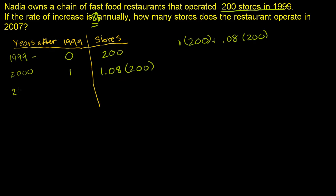Then in 2001, what's going on? This is now two years after 1999. You're going to grow 8% from this number. So you're going to multiply 1.08 times that number. Times 1.08 times 200. I think you get the general gist. If after n years after 1999, it's going to be 1.08. Let me write it this way. It's going to be 200 times 1.08 to the nth power. After two years, 1.08 squared. One year, 1.08 to the first power. Zero years. This is the same thing as 1 times 200, which is 1.08 to the 0th power.